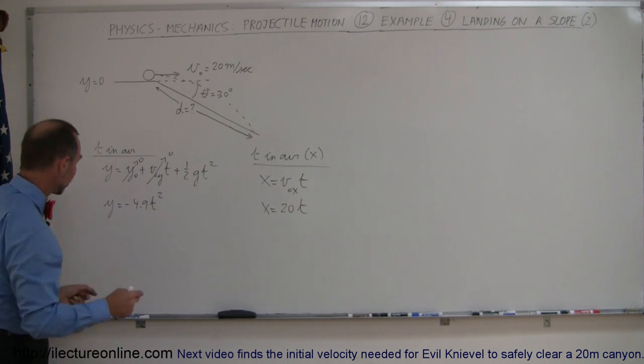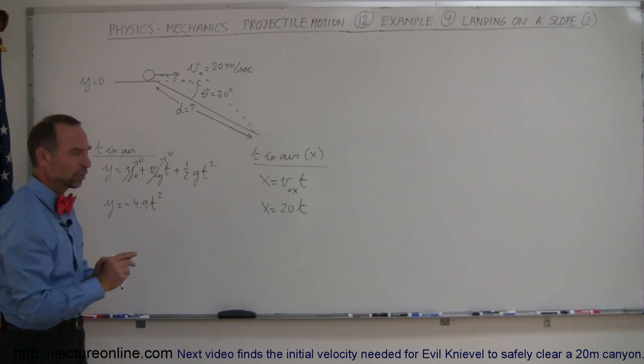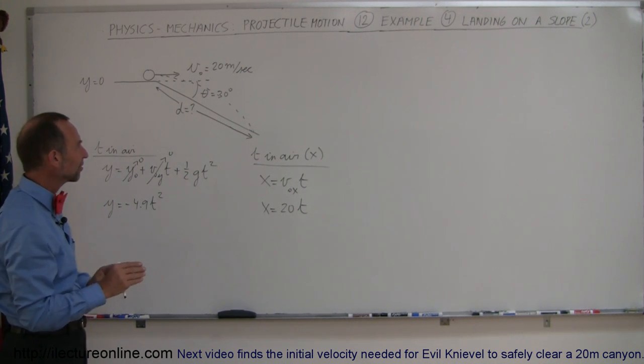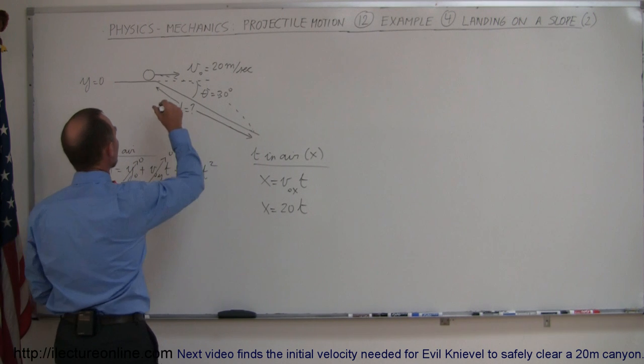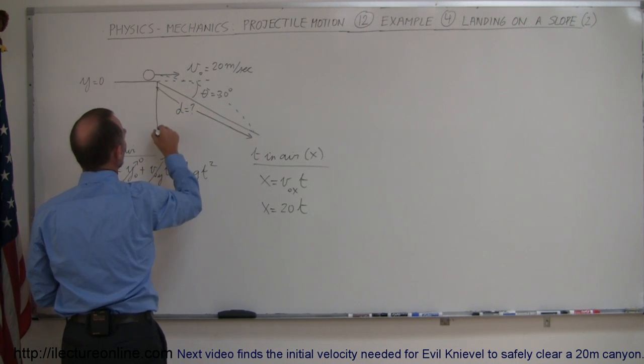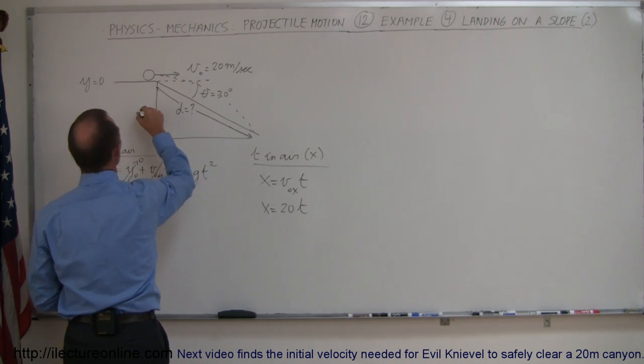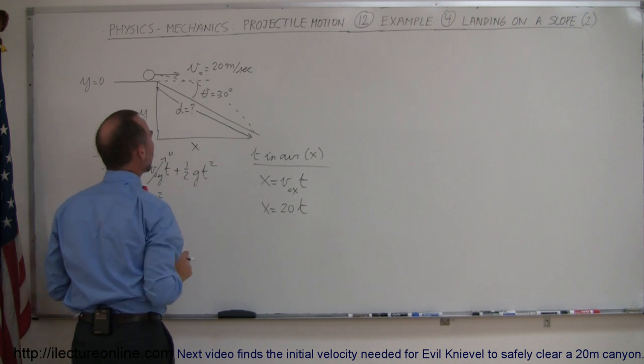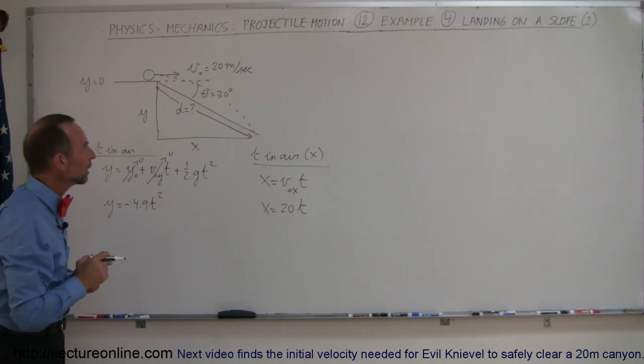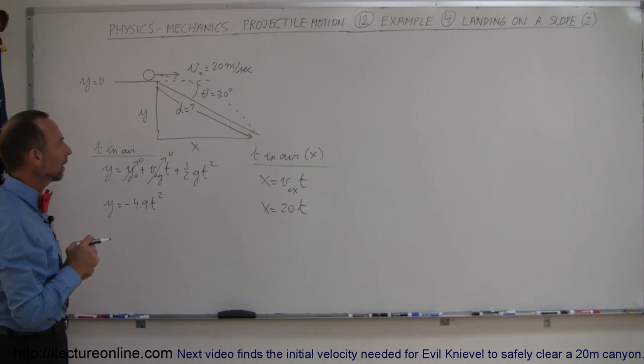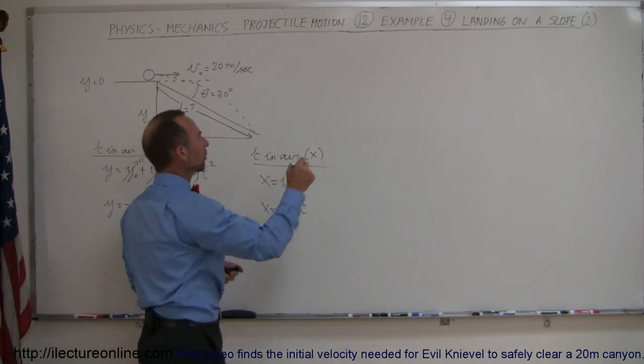Now, normally I would say set two equations equal to each other, but we can't do that here because x is not equal to y here. Notice that the y is smaller than the x because of the slope, so we have to find a relationship between x and y. The relationship can be found via the slope, so remember the equation y equals mx plus b.